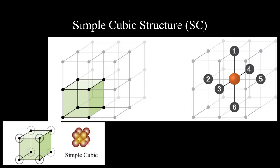Now let's talk about how many items are attached to a given atom. Here is a red color item — this is a picture of a simple cube. I want to see how many items are attached to this red color item at the nearest positions.